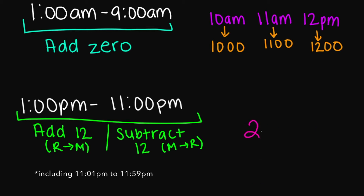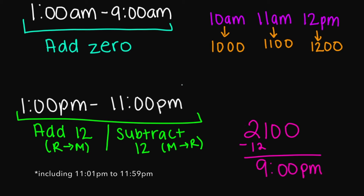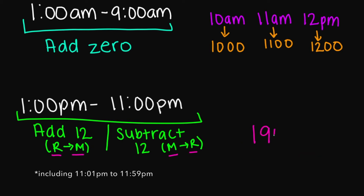So what if I gave you military time 2100 and you need to convert this into regular time? This time I'm going to subtract 12, and we're going to get 9 p.m. So if you're going from military to regular, you subtract 12; if you're going from regular to military, you add 12. What about 1900 hours? Subtract 12 — 19 minus 12 — this is going to be 7 p.m. regular time.